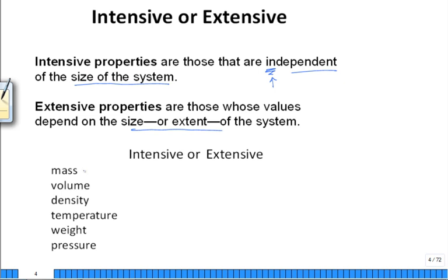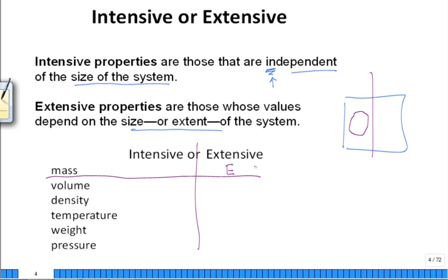Mass. Think about here's my system. Let's say I cut it in half. Then I ask, what is that same property concept called mass for a part of that system? Is it the same? No. So mass would be an extensive property, not an intensive property. That's the test: you cut it in half.